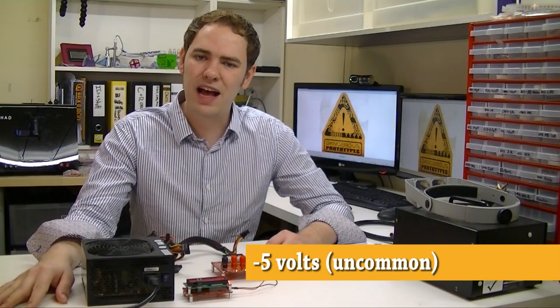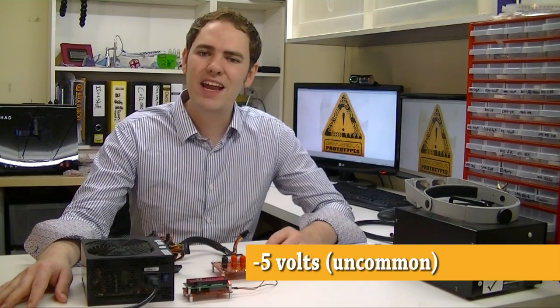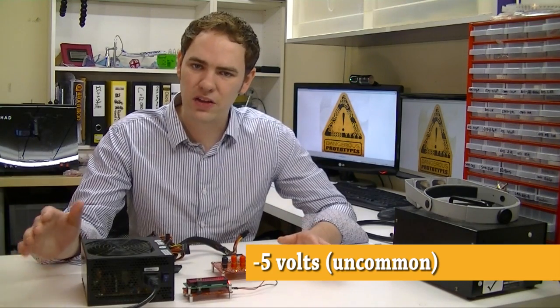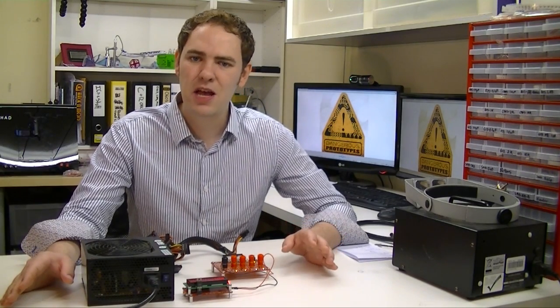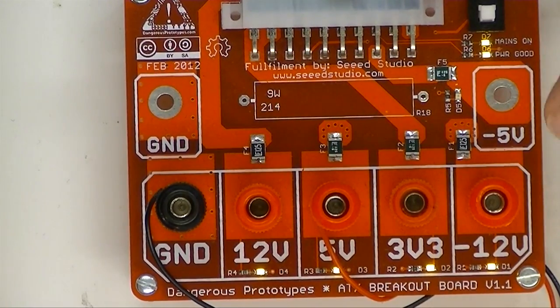The ATX specification includes an optional negative 5 volt rail. Now in our experience no power supplies we've worked with actually have the negative 5 volt. It's completely optional and it hasn't been using computers in maybe 10 or 20 years. But sometimes you find an ancient power supply that has it, and if you want to tap that we've brought it out to a header, but we've not included the screw terminal. Since most people won't have it, we save on shipping costs and also project costs.